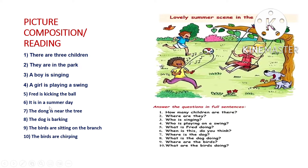What is Fred doing? Fred is kicking a ball. When is this? See the background of the picture — probably this is a summer day. Where is the dog? The dog is near the tree. What is the dog doing? The dog is barking. Where are the birds? The birds are on the branch. What are the birds doing? The birds are chirping.